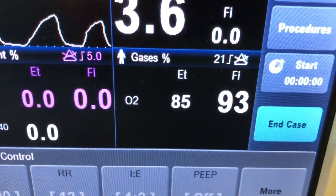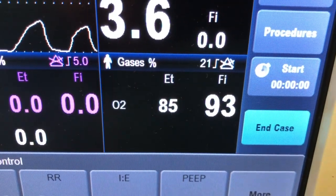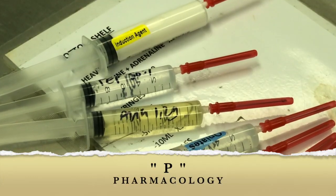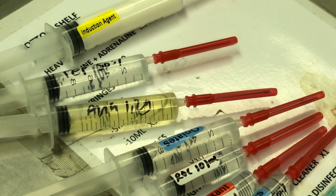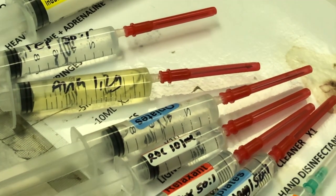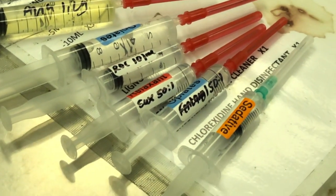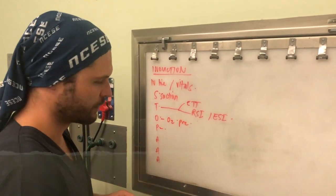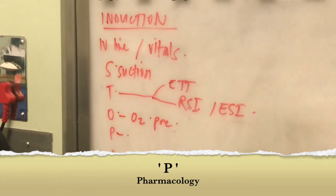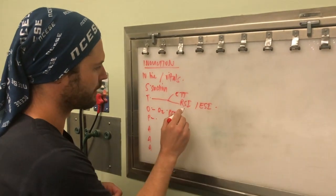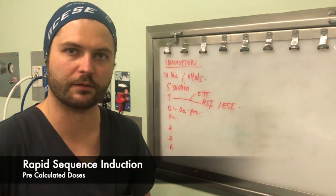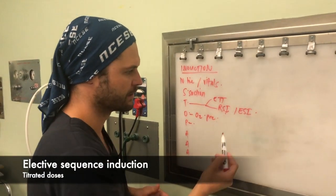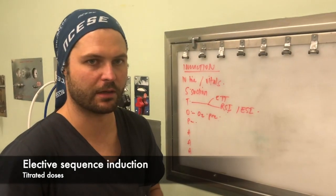I want to pre-oxygenate my patient to an end-tidal oxygen of more than 80%. Then we come to P, which stands for pharmacology — pre-calculated doses. With a rapid sequence induction we use pre-calculated doses, and with an elective sequence induction we titrate our induction agent.